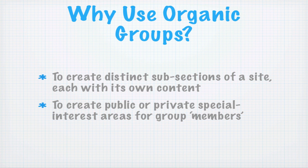What are some reasons why you might use Organic Groups? There are probably two big reasons why people often use it. One is if you have a site and you want to create some distinct subsections of the site, and each section needs to have its own content, with or without access control — maybe public, maybe private — but it's a subsection of the site that has its own characteristics and perhaps its own theme. The other reason is you actually have groups of people and want to create special interest areas for group members, which might be public or private depending on how the group is used.